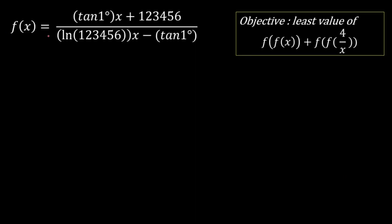Our function is f(x) = tan(1°)·x + 123456, whole divided by log(123456)·x minus tan(1°). Our objective is to calculate the least value of these two composite functions as a sum. Now before we calculate the composite function, let's observe something. While calculating f(f(x)), we will need the value tan(1°).